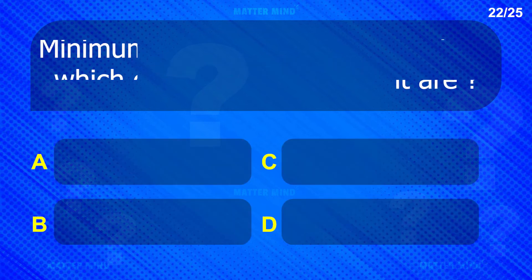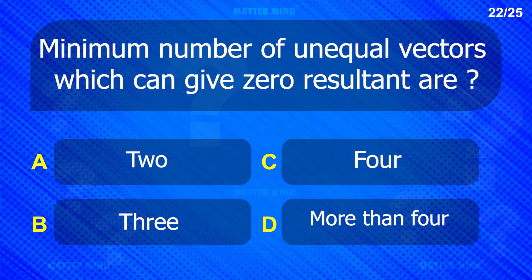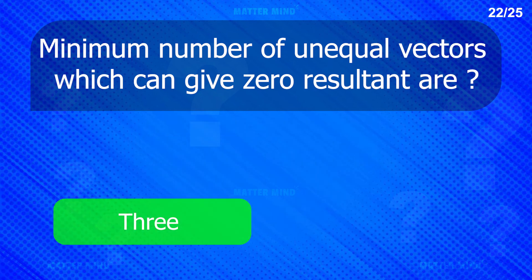Minimum number of unequal vectors which can give zero resultant — 3.